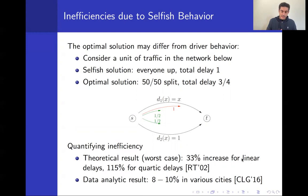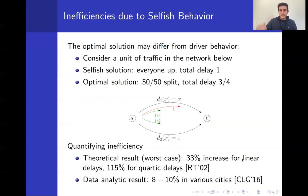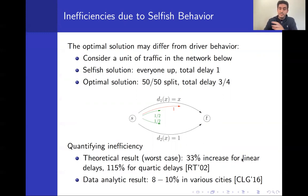The bottom link is a large highway with a fixed one-hour delay. A selfish driver will always pick the top link, since it will never be worse than the bottom. The equilibrium solution is the red one on the slide: all flow goes on top, experiencing a one-hour delay. But if we could split flow half-and-half, the bottom half experiences one hour and the top half experiences half an hour, for an average of 3/4 — which is optimal.